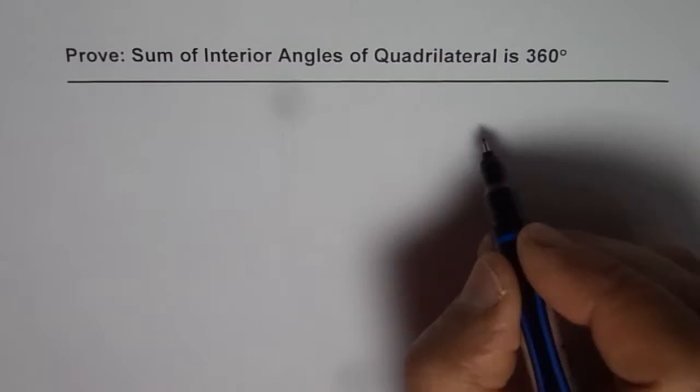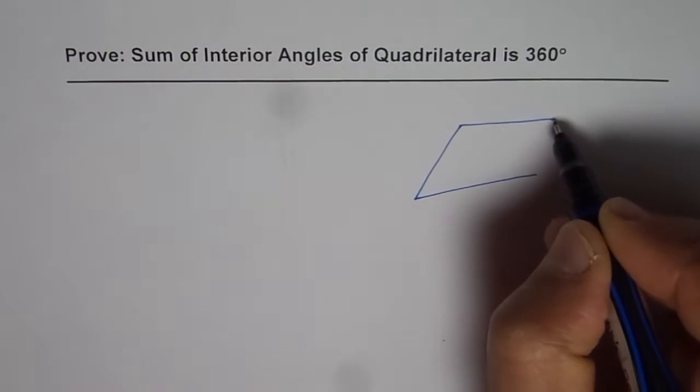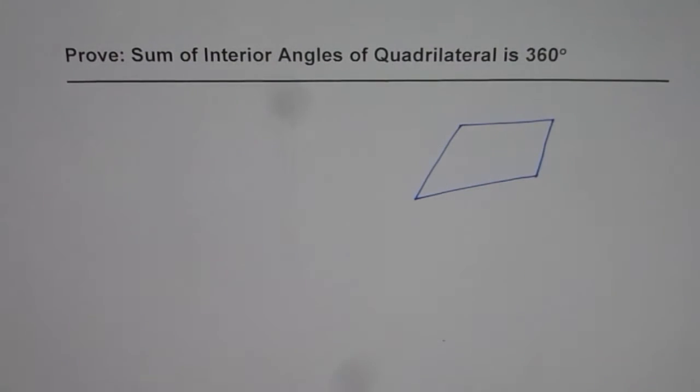A quadrilateral means a four-sided figure. So we could draw any four-sided figure. Let's say this is a four-sided figure.